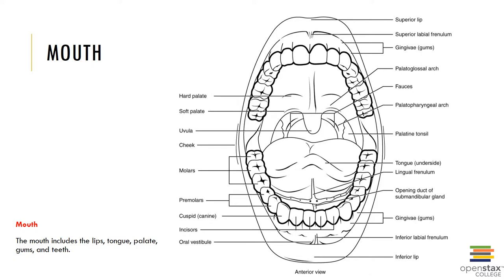The mouth includes the lips, tongue, palate, gums, and teeth. The tongue is composed of skeletal muscle to manipulate food, helps form words, and serves as a sensory organ for gustation or taste.